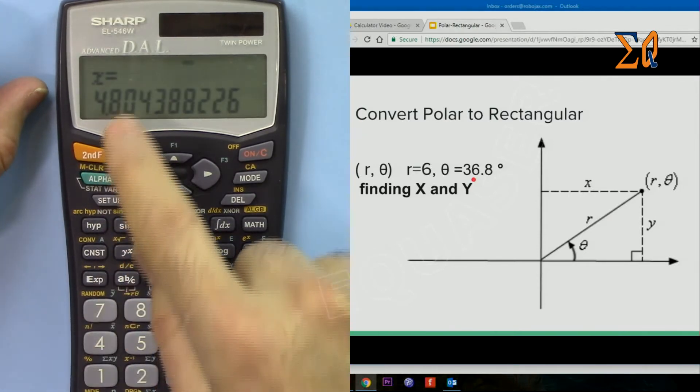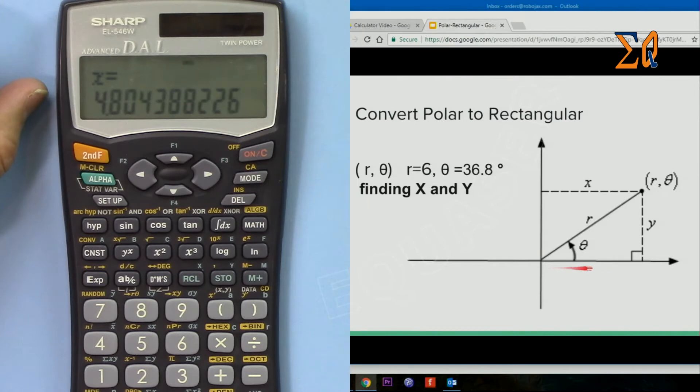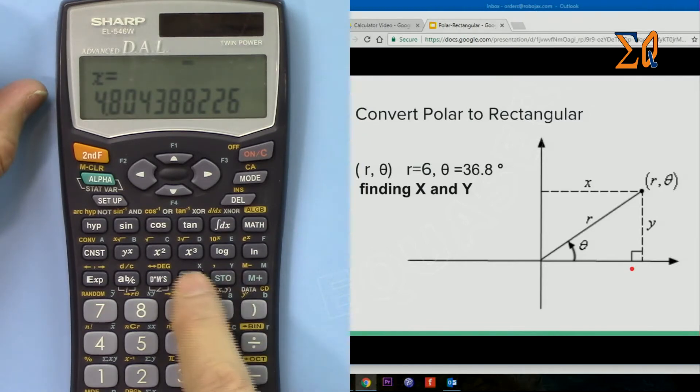So this is 4.8. The X length is 4.8. To get the Y, so we press recall and then Y.